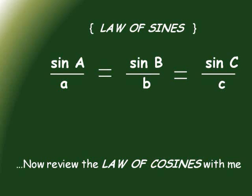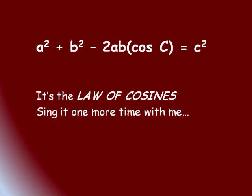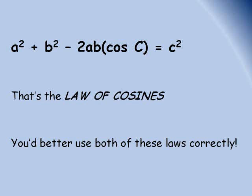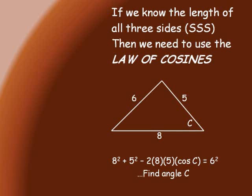Now back to the law of cosines: a squared plus b squared minus 2ab cosine C equals c squared — that is the law of cosines. Let's sing it one more time with me: a squared plus b squared minus 2ab cosine C equals c squared — that is the law of cosines. Better know what's correct.